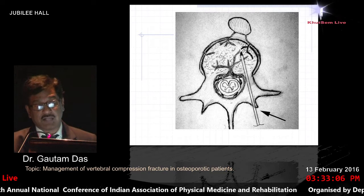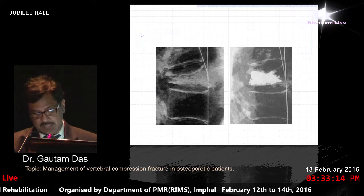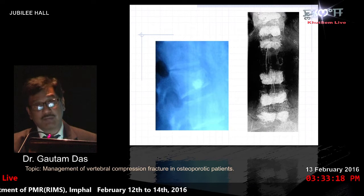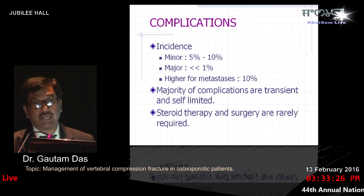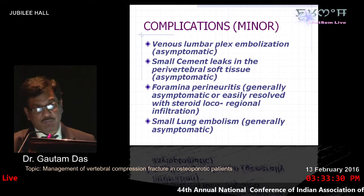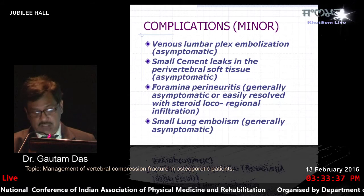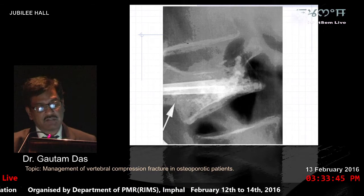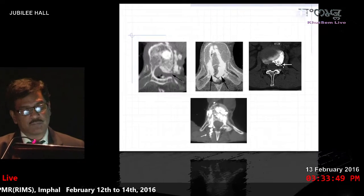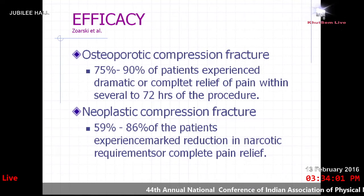After placing the needle into the anterior third of the vertebral body, the bone cement is injected. Sometimes we treat multiple levels in one patient — in the pre-conference workshop we did two levels. Complications are mostly minor, but major complications like paraplegia and death may occur. Bone cement leak is the most important concern: minor leak is generally not significant, but major leak requires immediate surgical decompression. A major pulmonary embolism can be devastating.